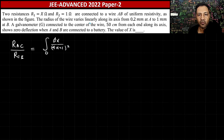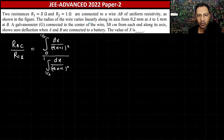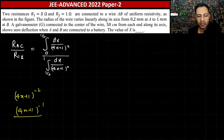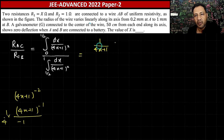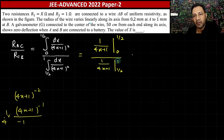Integrating 1/(4x+1)² gives (4x+1)^(-1) / (-1 × 4) = -1/[4(4x+1)]. The factor -1/4 appears in both numerator and denominator so it cancels. I therefore evaluate -1/(4x+1) with limits 0 to 1/2 for the numerator, and limits 1/2 to 1 for the denominator.